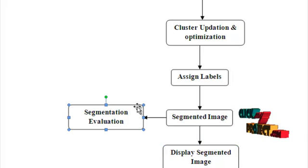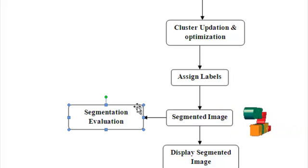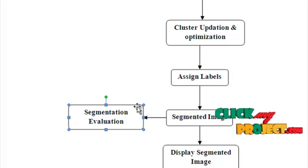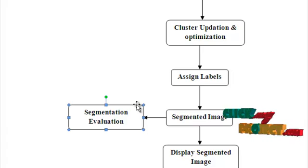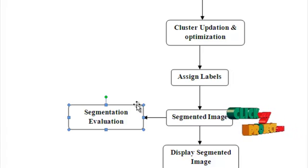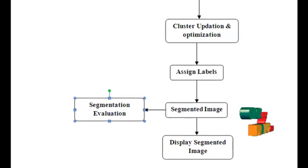Here we evaluate the segmentation efficiency by computing two parameters. The first is intracluster similarity — if it is high, it means low variance among intracluster members. The second parameter is segmentation time, and within a short duration of time we achieve the segmentation result in a perfect way.